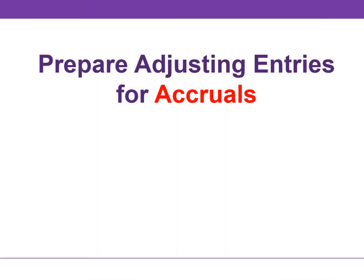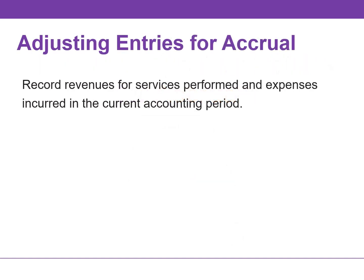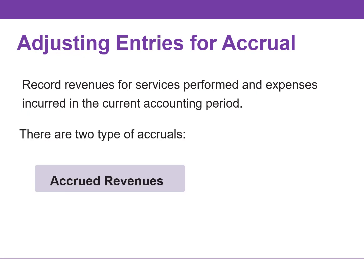The second category of adjusting entries is accruals. Adjusting entries for accruals record revenues for services performed but not yet recorded, and expenses incurred but not yet paid or recorded. Accruals are either accrued revenues or accrued expenses. Prior to an accrual adjustment, the revenue account and the related asset account, or the expense account and the related liability account, are understated.